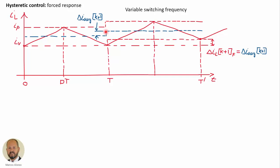Let's study the forced response — what happens when we do a step transient on the reference, on the average current we want through the inductor. If we increase this current, immediately the peak value and the valley value also increase. The current increases reaching the peak value, then decreases to the valley value, and then we are inside the limits again, achieving the desired average value in less than one switching period. The issue is that the switching period is variable; if the average value is very high, the peak value is high and the current increases until the necessary value and decreases again. Both the on and off times are variable — they behave like analog variables and can take any values, as can their sum, the switching period.